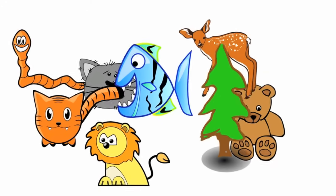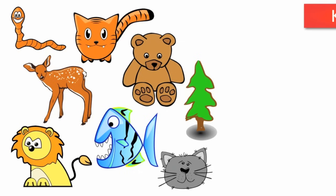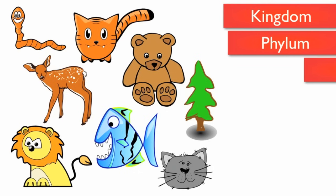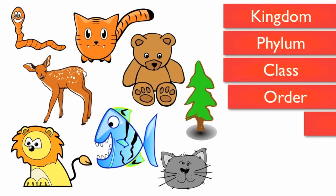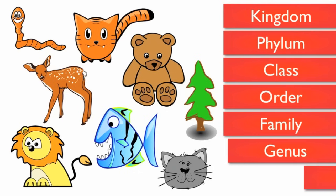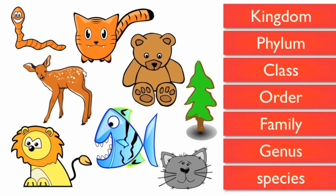From general to specific, the levels of classification are: kingdom, phylum, class, order, family, genus, and species.